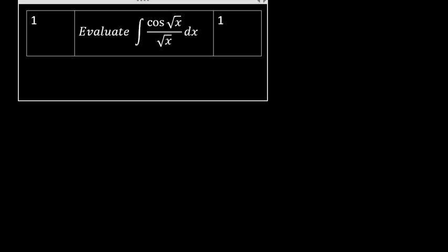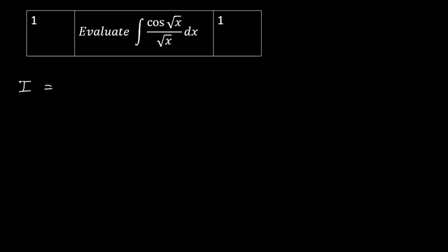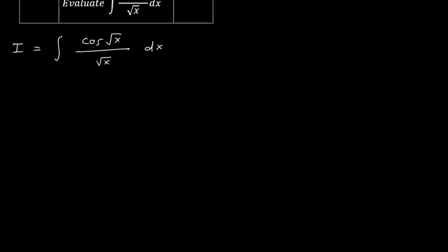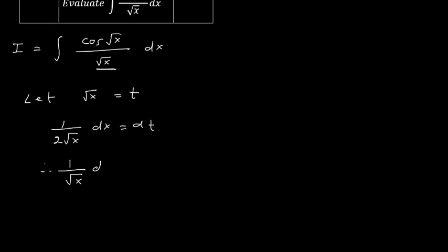The first question is: I = ∫ cos(√x) / √x dx. We can substitute √x as t. If we put √x = t, then we get 1/(2√x) dx = dt. You see that 1/√x is there, so therefore 1/√x dx = 2 dt. By inspection you should understand what substitution you should do.